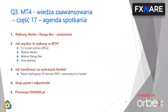Agenda dzisiejszego spotkania: najpierw krótko omówimy co to są wykresy RENKO i range bar, potem powiemy jak uzyskać te wykresy w MT4, co należy zrobić, żeby taki wykres odpalić. Pokażę też jak można handlować na wykresach RENKO z użyciem panelu tradingowego FX Harvest Pro, gdzie są funkcje automatyzujące taki handel. Będzie też zapowiedź nowego modułu RENKO do FX Harvest Pro, który powinien być dostępny w ciągu najbliższych tygodni.